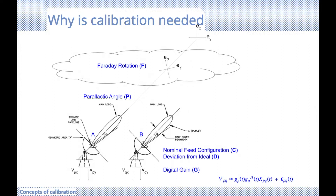In general, these distortions can be described as rotations and translations applied to the signal components as it travels along the line of sight towards the telescope. The relation between the measured visibilities and the actual visibilities is a linear equation — good for us — meaning the introduced distortions can be described as parameters representing a gain factor per antenna in the antenna pair, plus an additive noise term. Both the gain and the noise have to be calibrated out in our interferometer measurements.